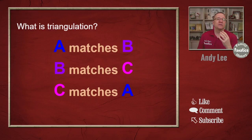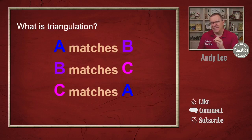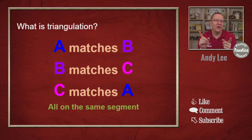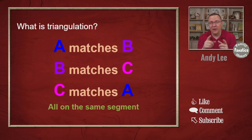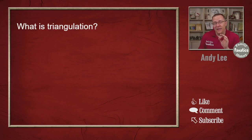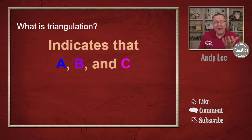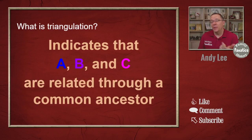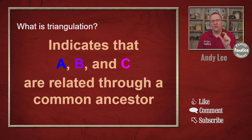Typically when we're talking about DNA and triangulation, just matching each other is not enough. You can't just share DNA. You actually have to share DNA all on the same segment — a specific chromosome, a specific location, start and endpoint on that chromosome — shared with all three people. This means that person A, B, and C, who all share this same segment, are related through a common ancestor. That segment of DNA was passed down through this common ancestor.